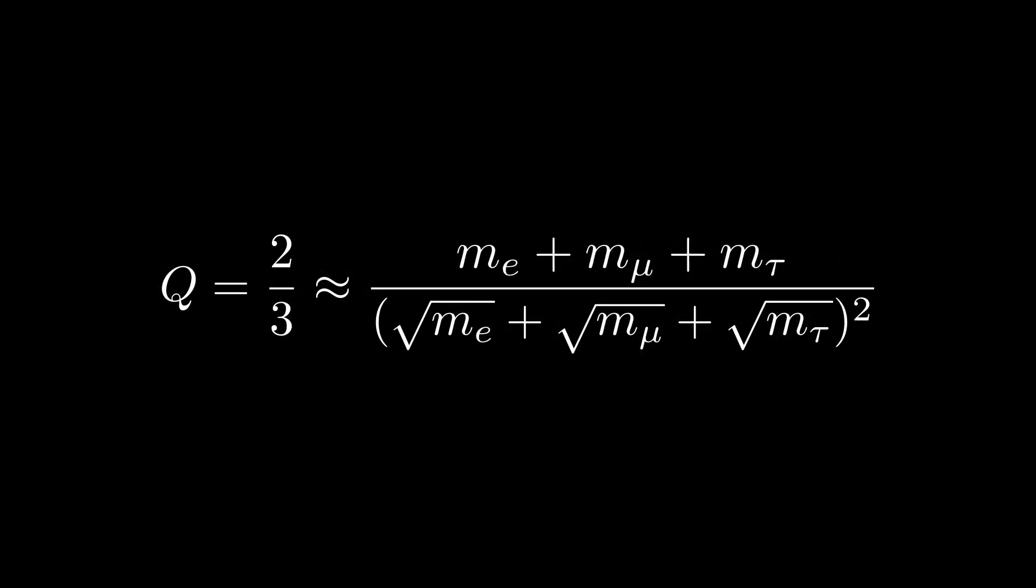The formula suggests that when the sum of the masses is divided by the square of the individual masses square-rooted, the result is approximately equal to two-thirds.